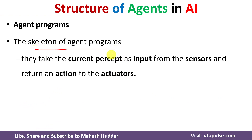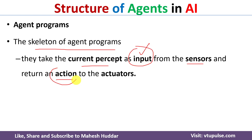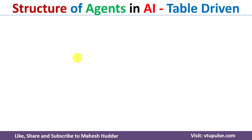The skeleton of an agent program looks something like this: it takes the current percept from the sensors as input, and based on that current percept it selects an action, which is then executed with the help of actuators. In our agent programs we are interested in what is the input to our algorithm and what action is returned — we are not much concerned with how it is executed by the actuators.